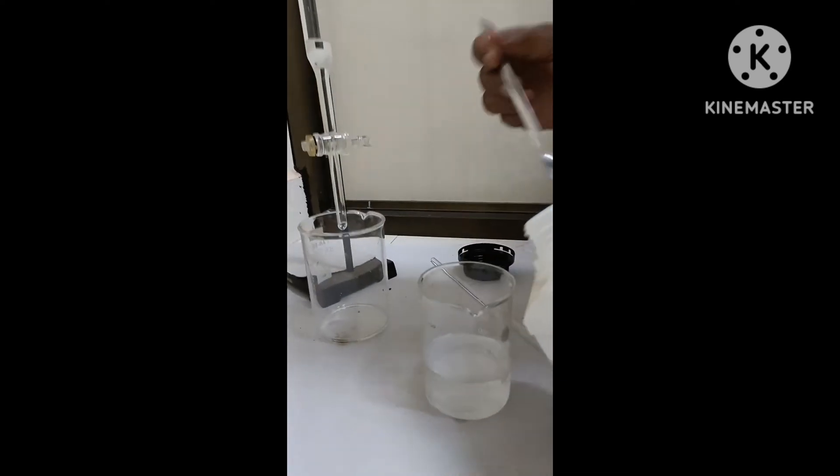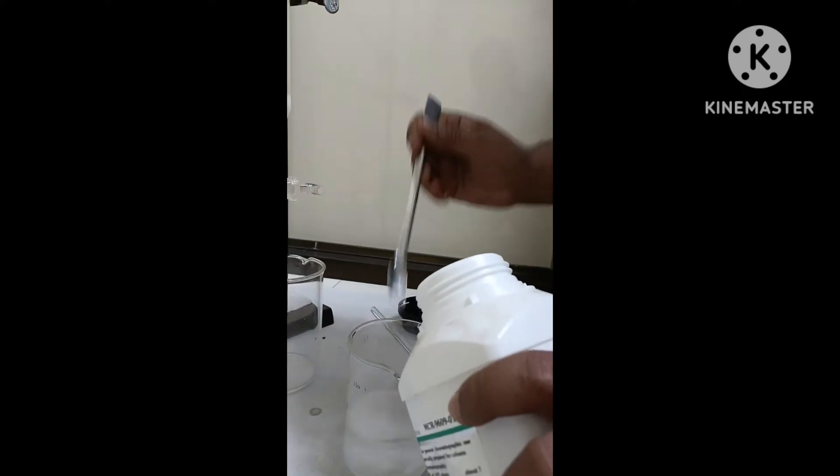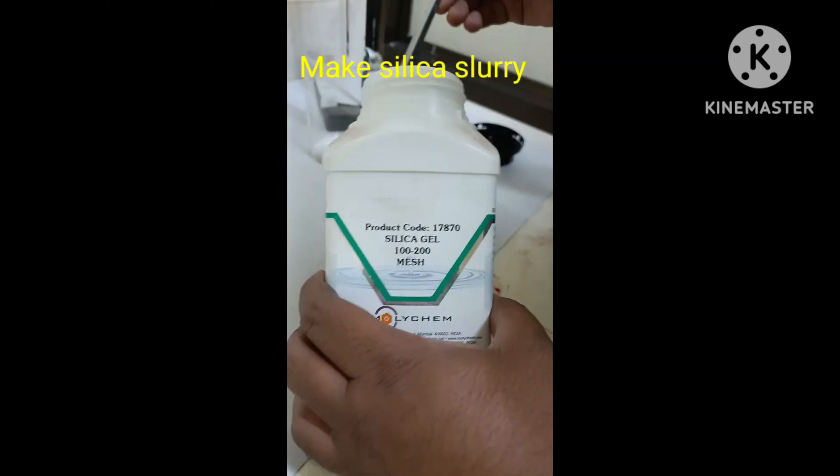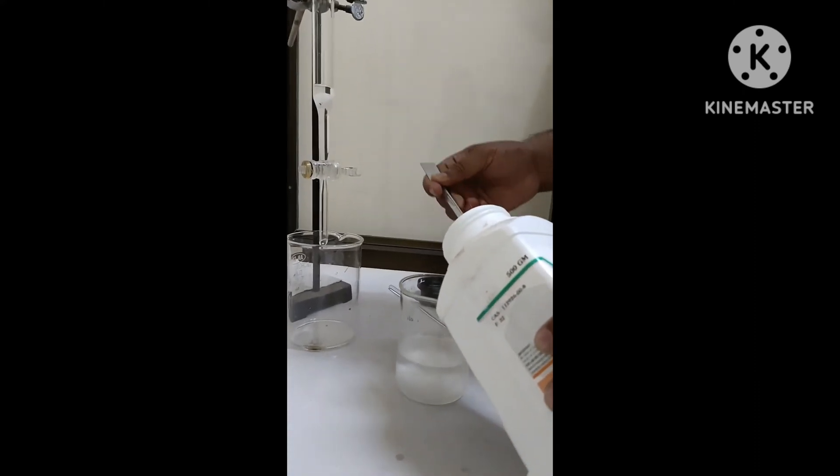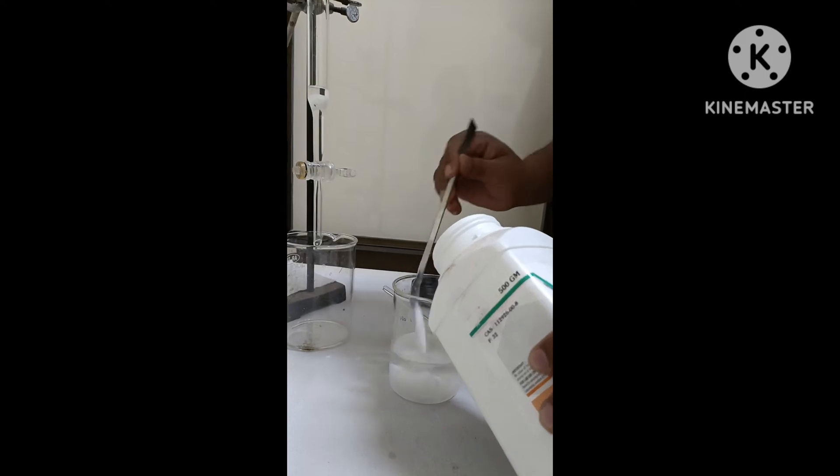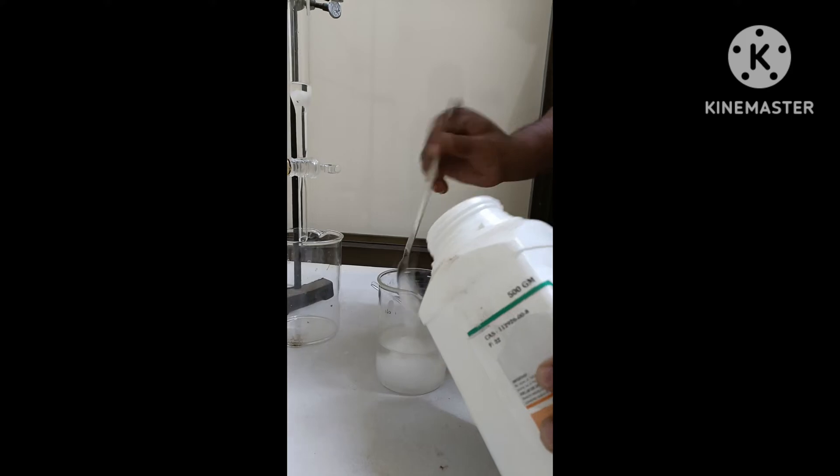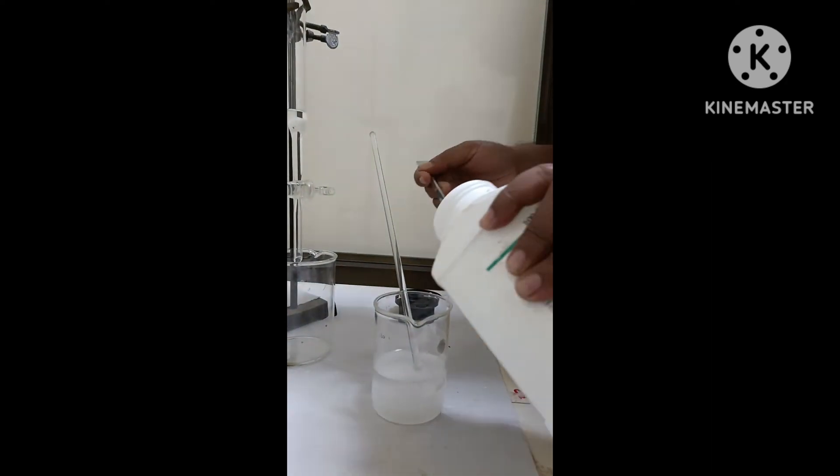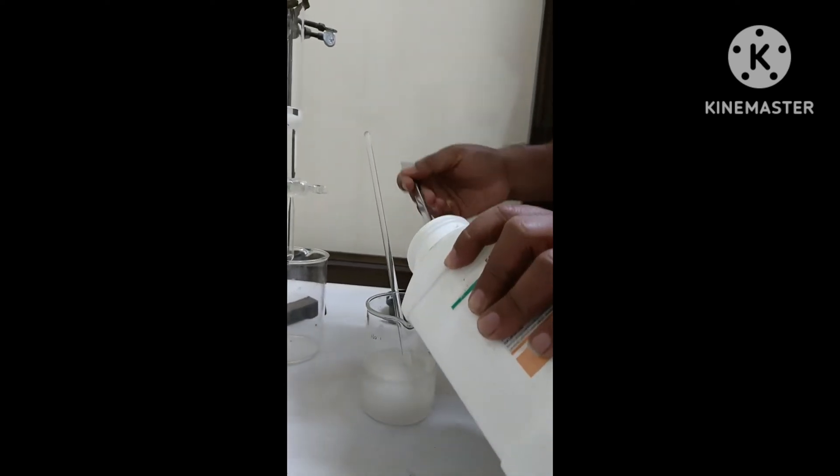Here the silica which we are using is of size 100 to 200 mesh size and this is a special silica manufactured for column chromatography. In another video we have discussed how the column packing is done using wet packing method. The link for the same video is given in the i button and also in the description box. We have to make the silica slurry in n-hexane.